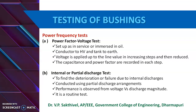The next one is the internal or partial discharge test. This test is intended to find the deterioration or failure due to internal discharges caused in the composite insulation of the bushings. This is done using an internal or partial discharge arrangement. The voltage versus discharge magnitude as well as the quadratic rate gives an excellent record of the performance of the bushing in service. This test is now treated as a routine test for high voltage bushings.